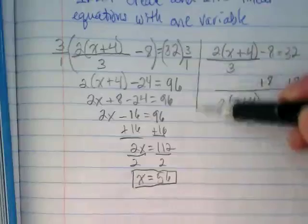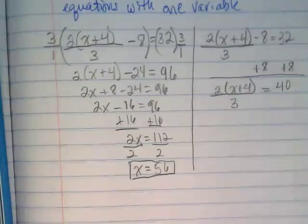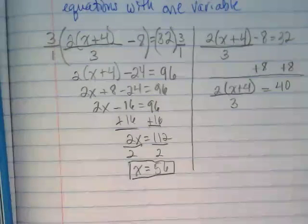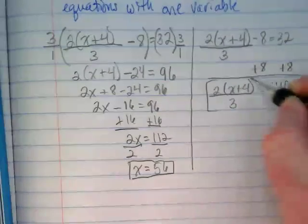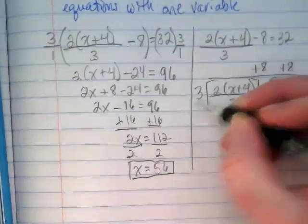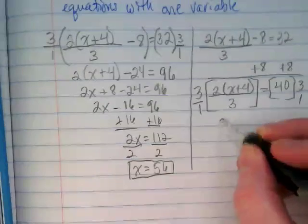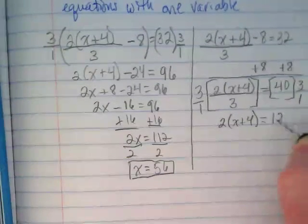You know what? I'm going to draw a line down between them to show it's really different. Okay, and then I'm going to multiply both sides by 3. That's going to give us 2 times x plus 4 is equal to 120.